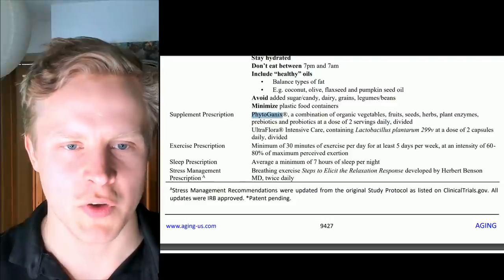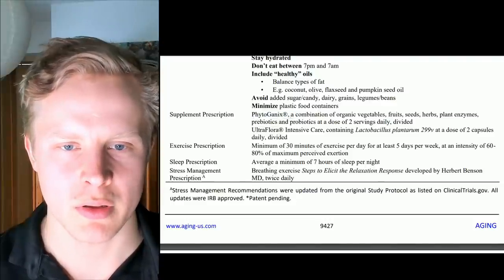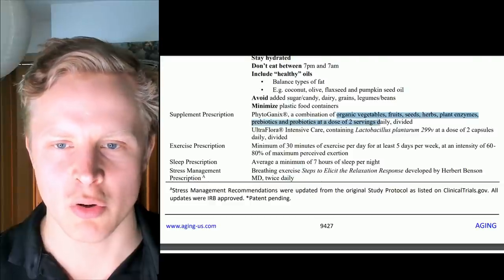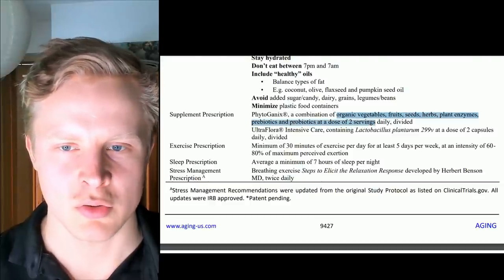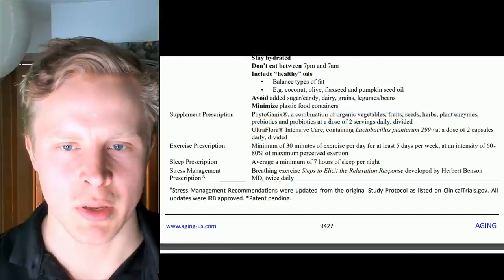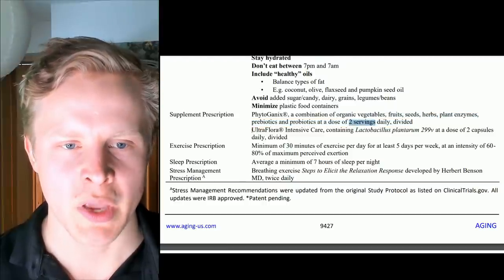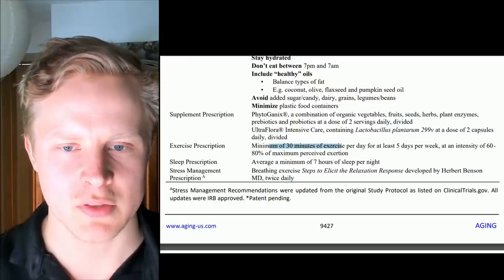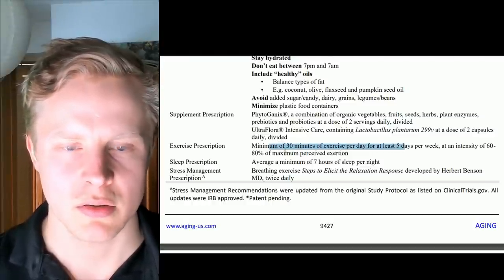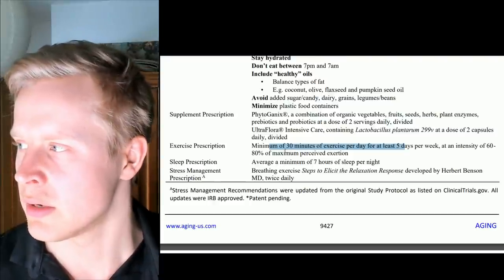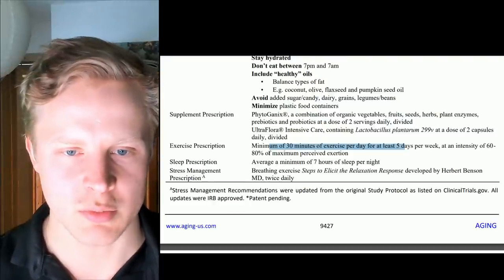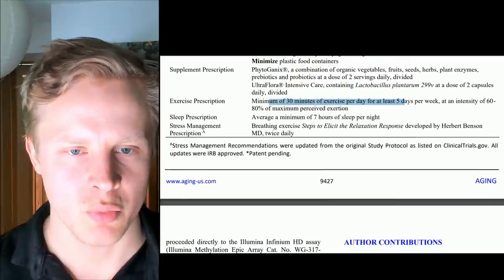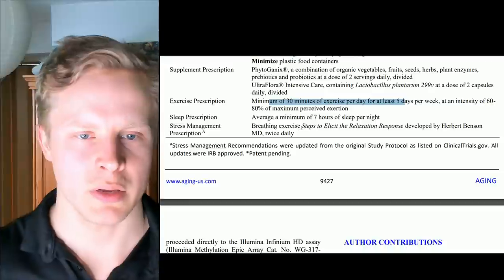The supplement was phytogenics, which is the polyphenol powder basically of these berries and vegetables to get more of these phytonutrients in, probably 2 servings daily. And ultraflora, which is the probiotic. Exercise, minimum of 30 minutes of exercise per day for at least 5 days at an intensity 60-80% of maximum exertion. Sleep, average 7 hours. Breathing exercise.